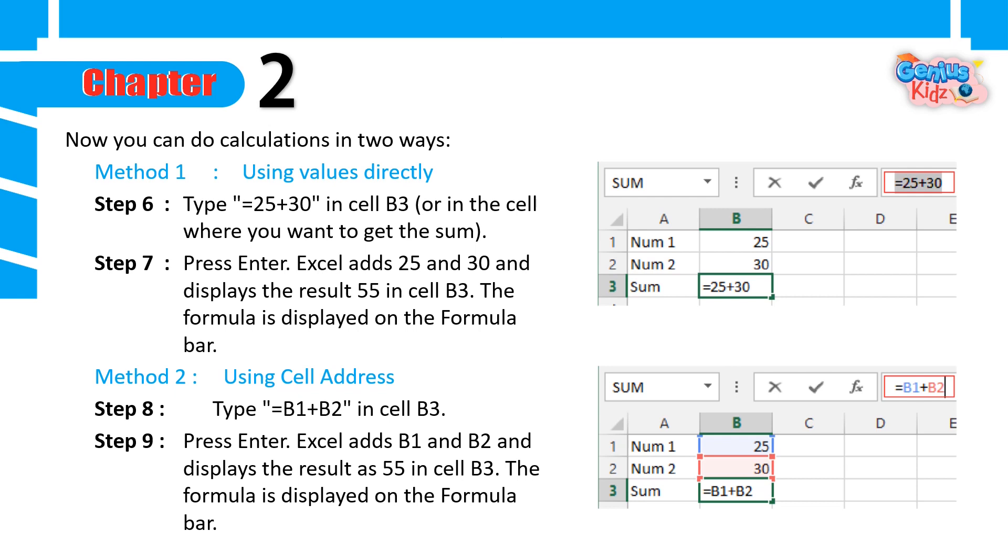Method 2: Using cell address. Step 8: Type equals B1 plus B2 in cell B3. Step 9: Press Enter. Excel adds B1 and B2 and displays the result as 55 in cell B3. The formula is displayed on the formula bar.